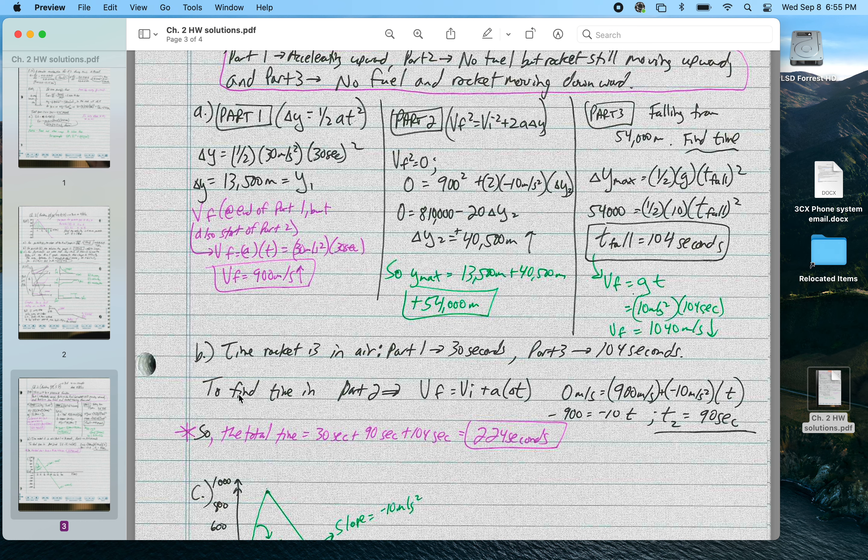Well, for part b, or part 2 I guess, I can use a couple of different ways to do this. vf equals vi plus at is reasonable.